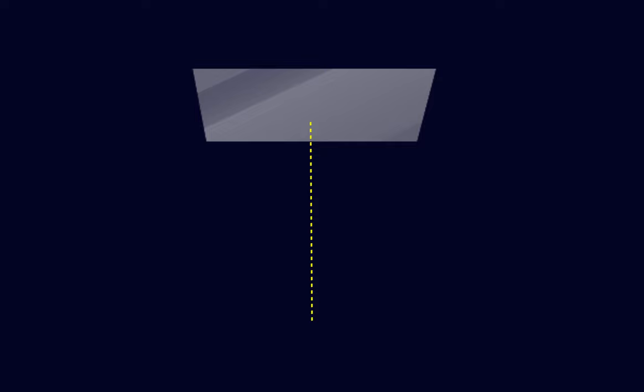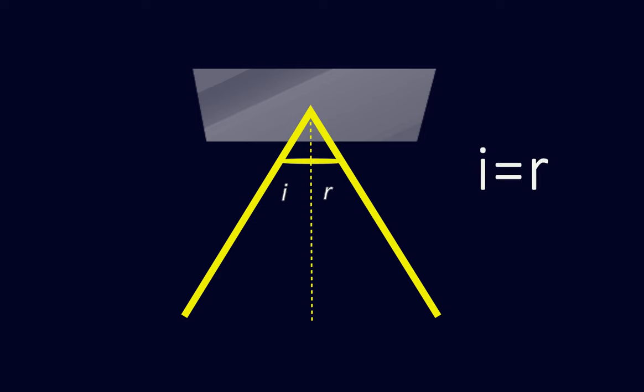The light rays falling on a reflecting surface follow a set of rules. First, the incident ray, the normal to the mirror at the point of incidence, and the reflected ray all lie in the same plane. Second, the angle of incidence is equal to the angle of reflection. The laws of reflections are applicable to all types of reflecting surfaces.